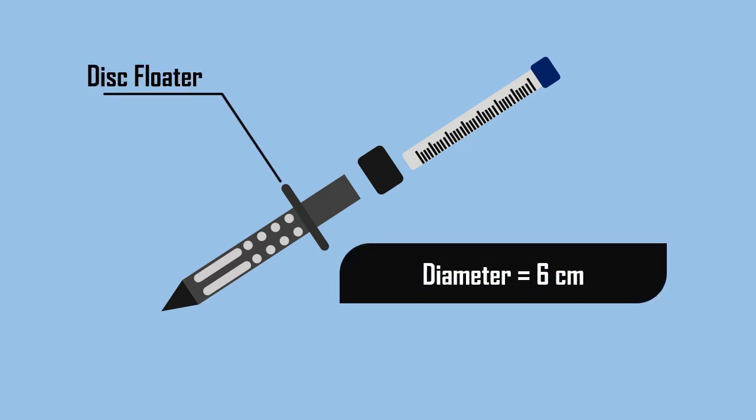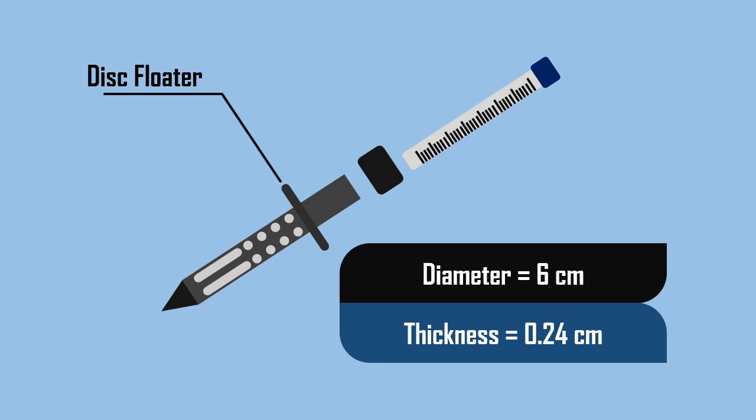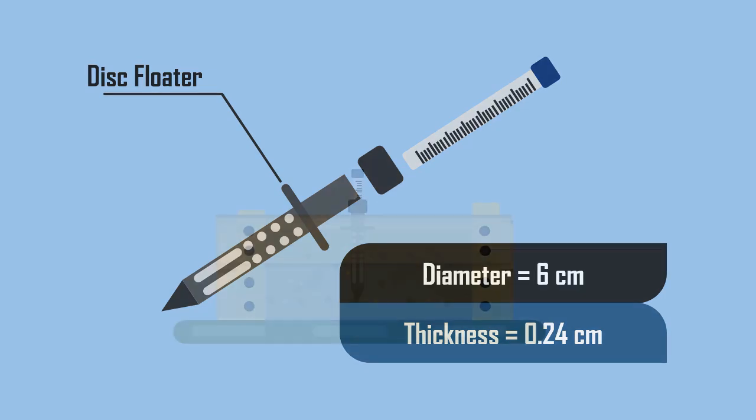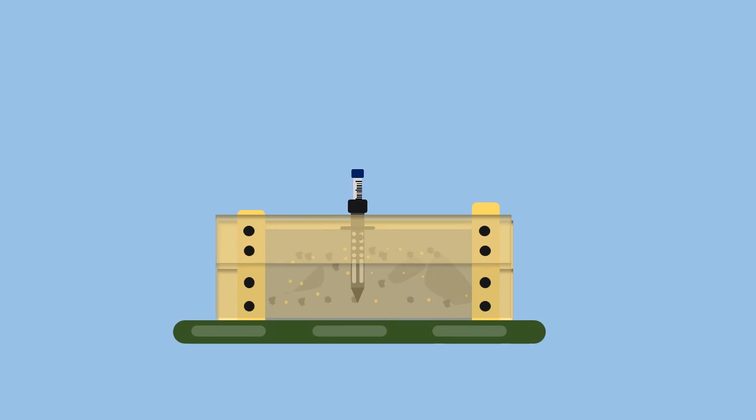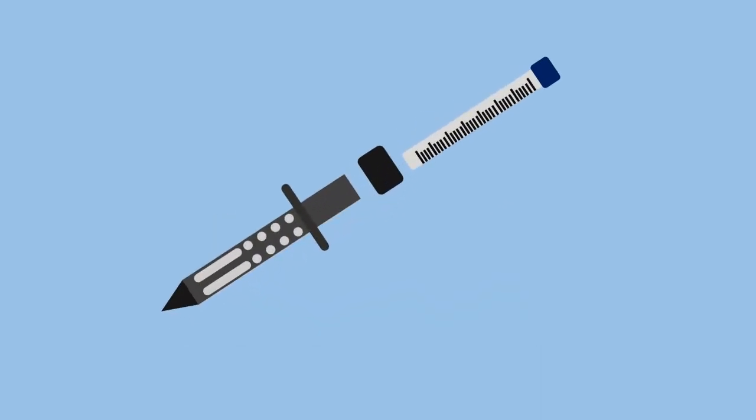A disk floater, 6 cm in diameter and 0.24 cm in thickness, divides the tube into two parts. This disk prevents the tester from sinking into the concrete beyond the pre-selected level.